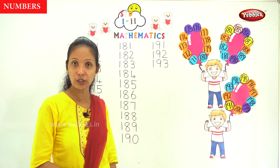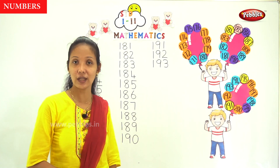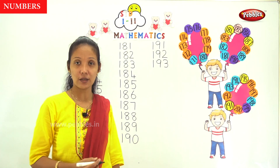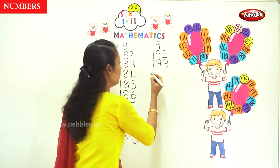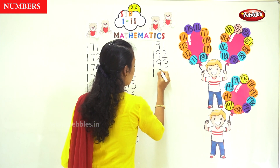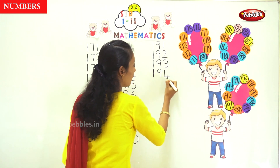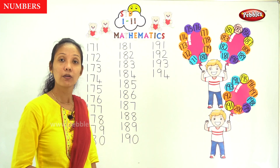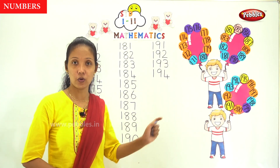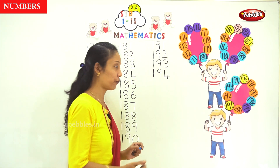Now after hundred and ninety-one. Now after hundred and ninety-three. Now after hundred and ninety-four. What is your next number? Hundred and ninety-five. Good.